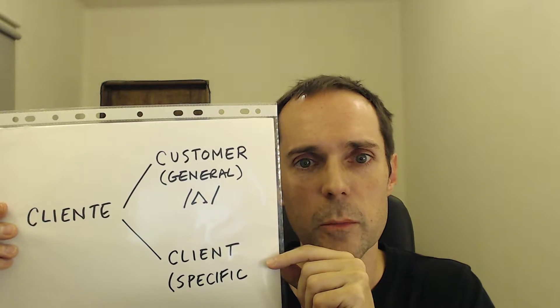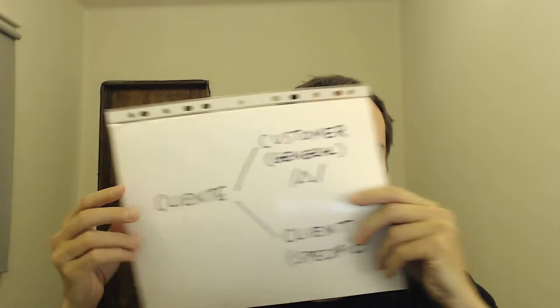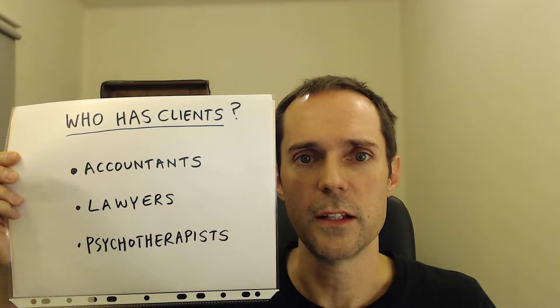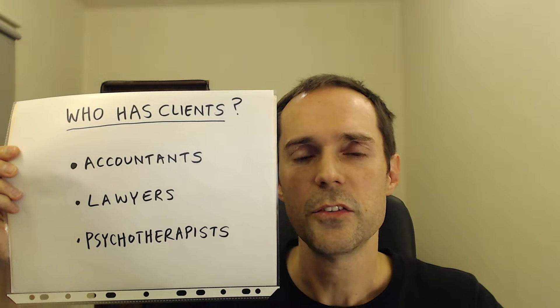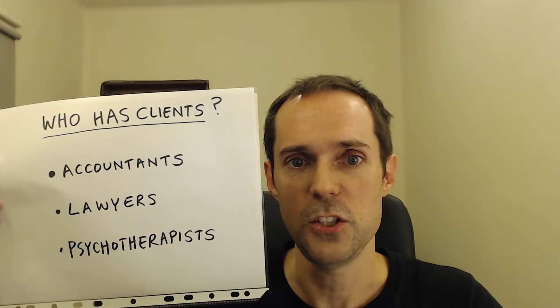The more specific term is client, so let's take a closer look at that. What type of business has clients? Accountants have clients. Lawyers defend clients. Psychotherapists have clients. Psychiatrists, doctors, and dentists have patients.